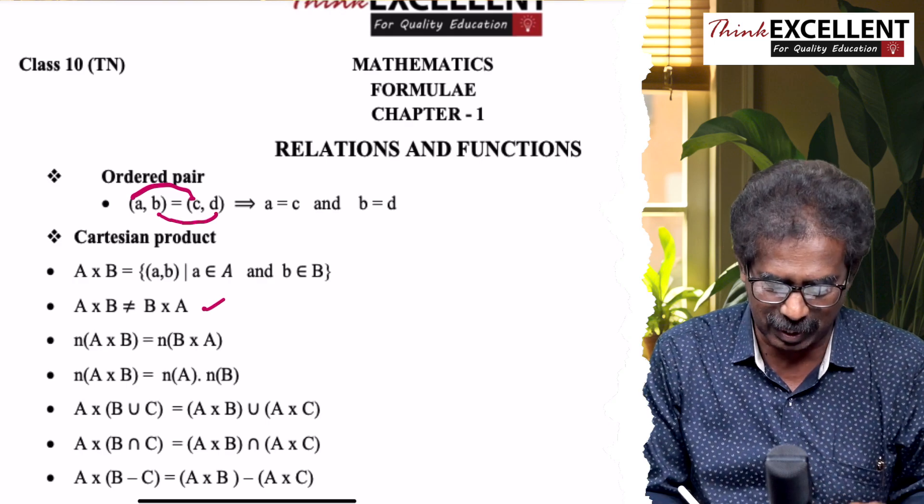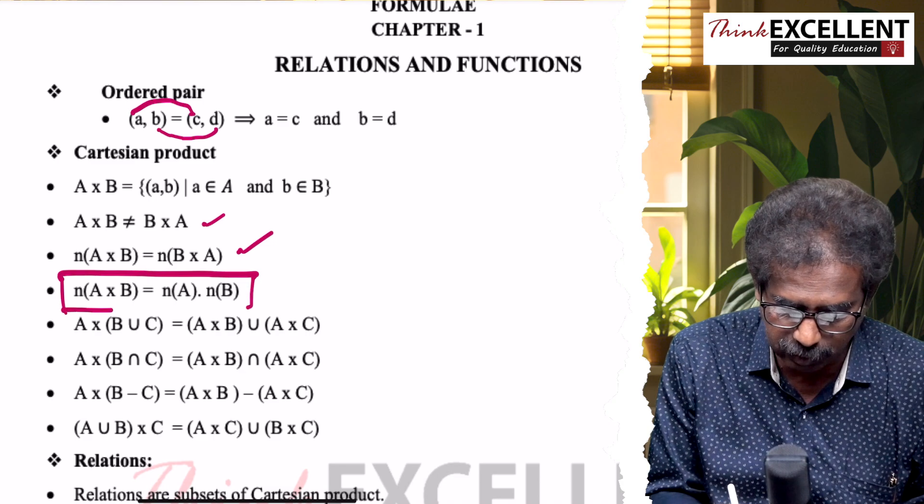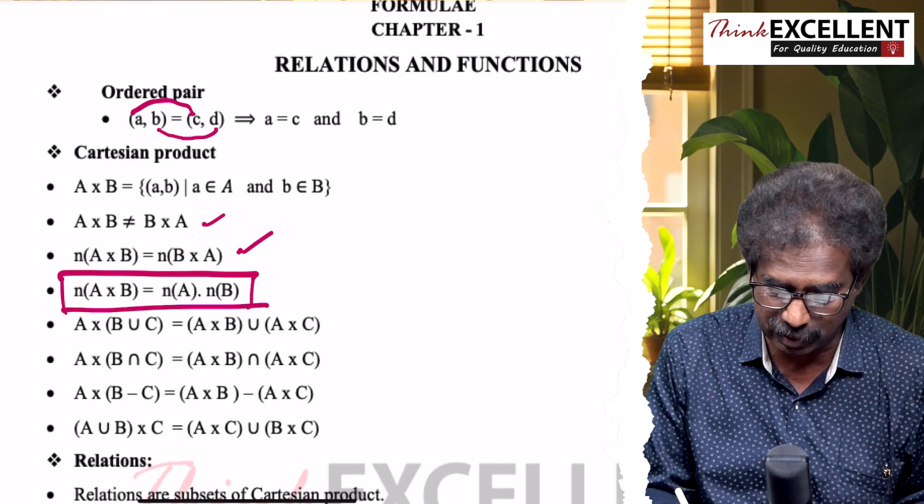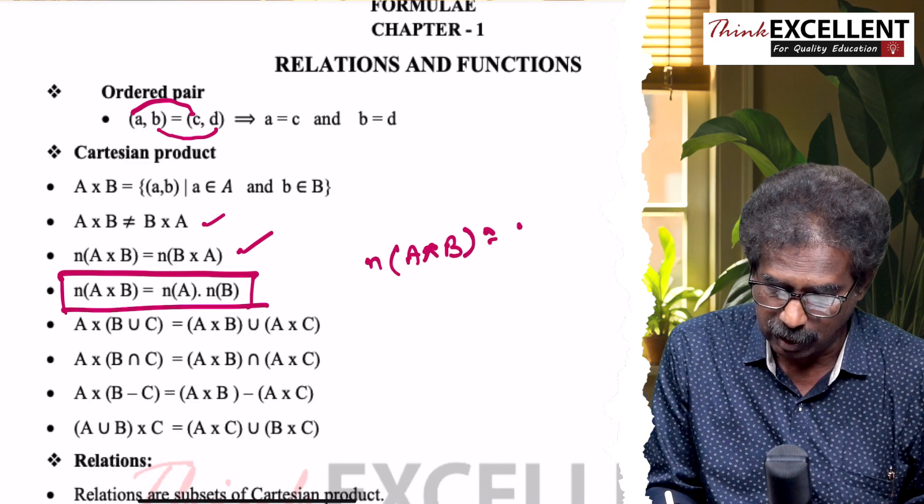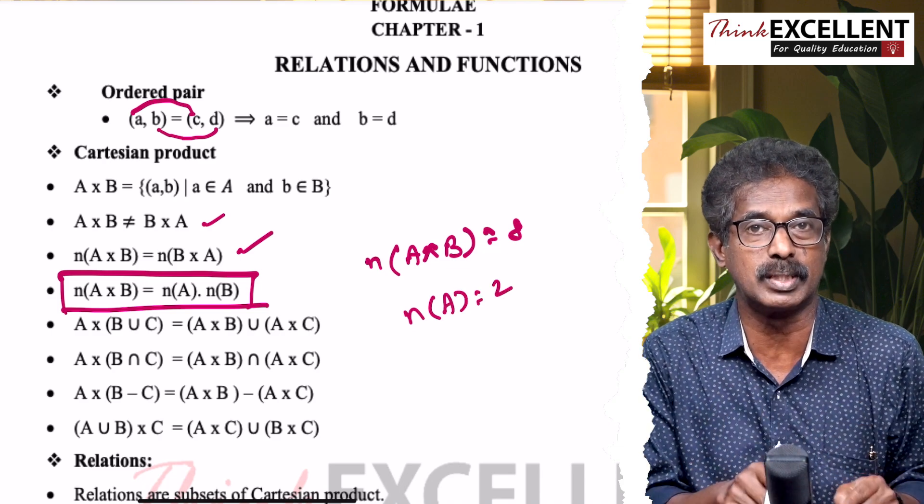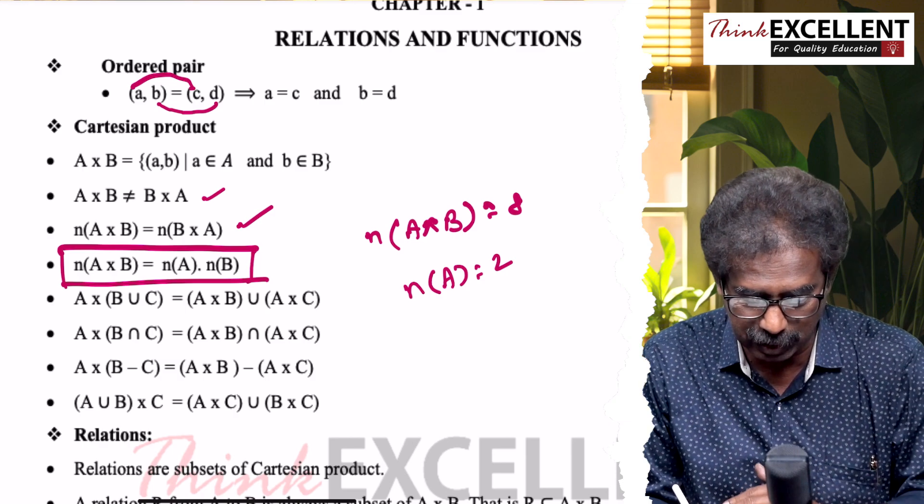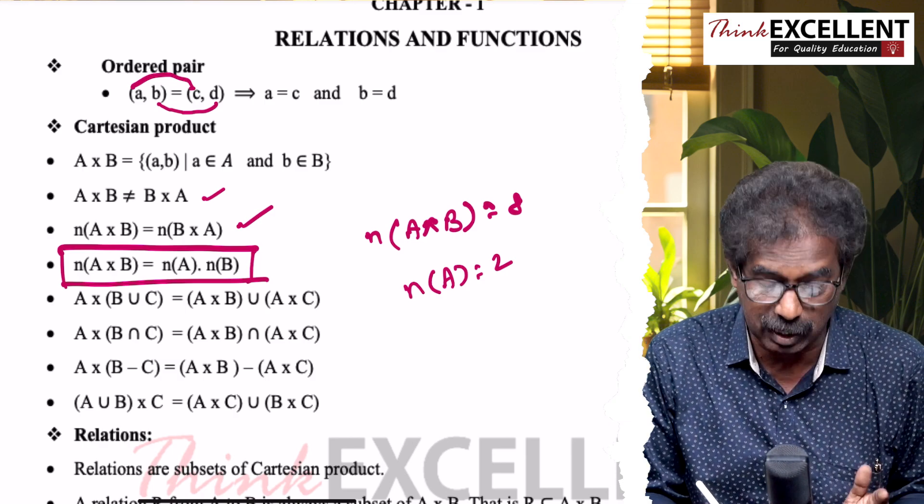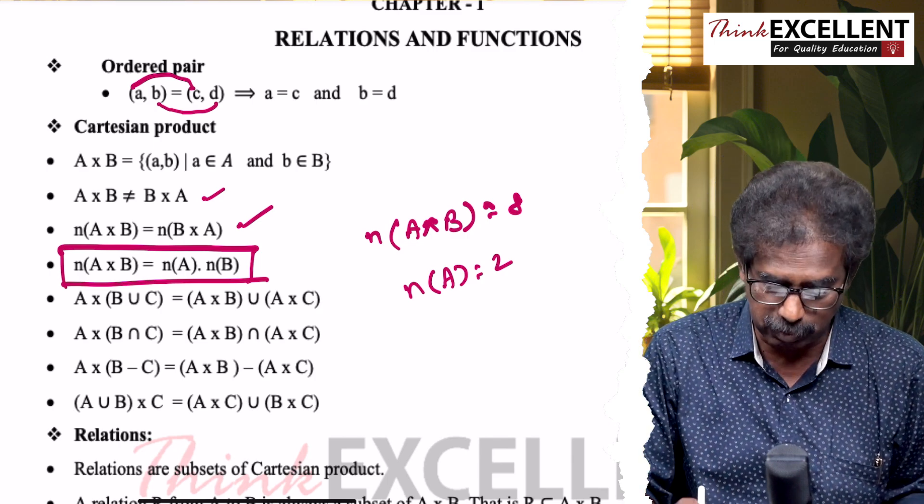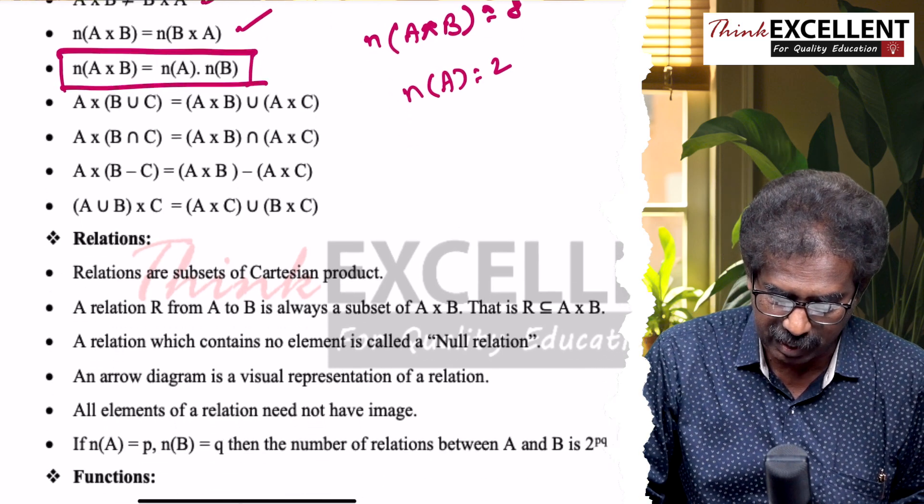Then Cartesian product, A cross B is the set of all ordered pairs where first element is from A, second element is from B. A cross B not equal to B cross A, but number of elements are equal. N(A × B) = N(B × A). Then, this is important: N(A × B) = N(A) into N(B).